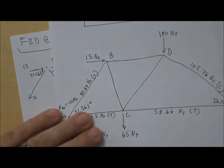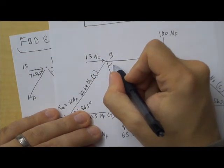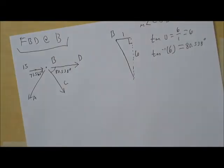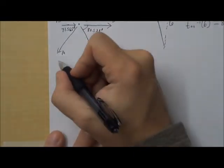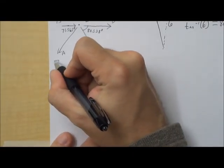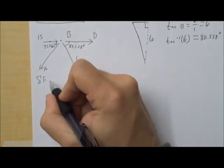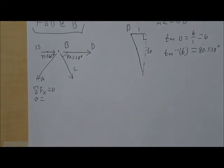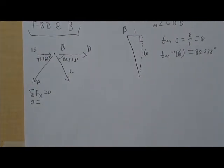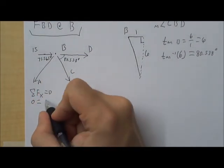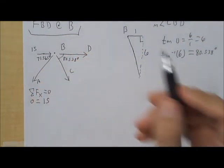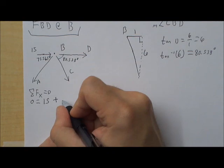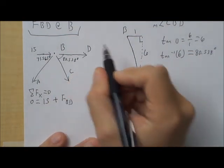This right there is 80.538 degrees. We can also put that on our final answer here. 80.538 degrees. Okay, so we're using the same two formulas. The sum of the forces in the x direction equals 0. I just always start with that one. You certainly don't have to. Alright, what do we have going on in the x direction?